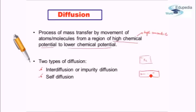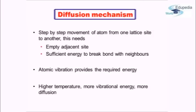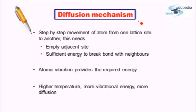With this background, let's discuss what is the diffusion mechanism. Exactly how does diffusion take place? We understand that diffusion takes place due to concentration difference. But what exactly is happening? During diffusion, a step-by-step movement of an atom takes place from one lattice site to the adjacent lattice site. So it is moving step-by-step. Suppose this site is vacant, the atom will move from here to the next site and it will keep on moving one step at a time.